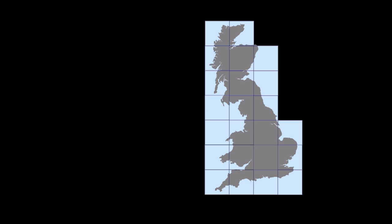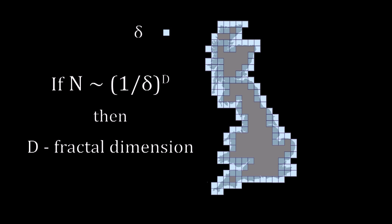Such an object has dimension D higher than its topological dimension. To put it more formally, imagine figure F lying on an evenly spaced grid, and count how many boxes N of size delta are required to cover it. The smaller the box, the more of them we would need. If this function N is proportional to 1 over delta to the power of D, we can say that figure F has a fractal dimension D. This is called the Minkowski or box-counting dimension. There are other definitions, but we won't go deeper into that for now.